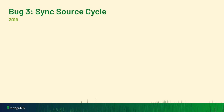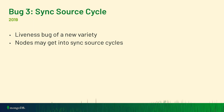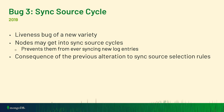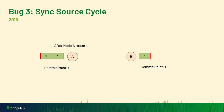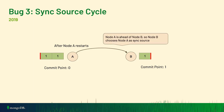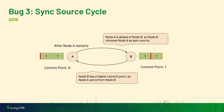Fast forward to 2019: we discovered another liveness bug. Nodes may end up in sync source cycles, which would prevent them from ever getting new log entries. This was a consequence of the previous alteration to sync source selection rules. In a simple two-node example, node A is ahead of node B, so B picks A as its sync source and replicates one entry. But because of the new alteration, A might then say it can sync from B because B's commit point is greater than A's own, even though they have the same logs. Now A and B are locked in a cycle and will never make progress.